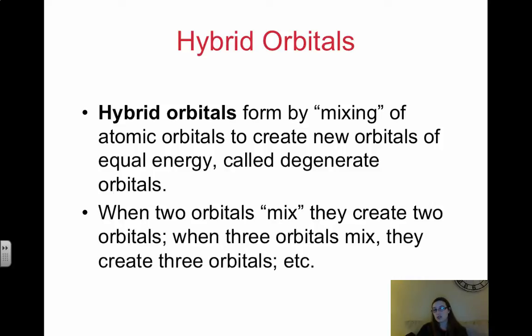A degenerate means equal energy. So hybrid orbitals, when you create hybrid orbitals, they actually all have equal energy. So when two orbitals mix, they create two orbitals. When three orbitals mix, they create three new orbitals. So you can't put two orbitals together and expect to get four or five out. You put two orbitals into mix, you get two out.